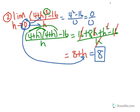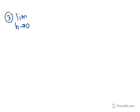The last example: find the limit as h approaches 0 of 1 over (h plus 2) minus 1 half, all over h. There's nothing to factor and nothing to foil, but there are two expressions in the numerator, so you want to use the idea of a common denominator.